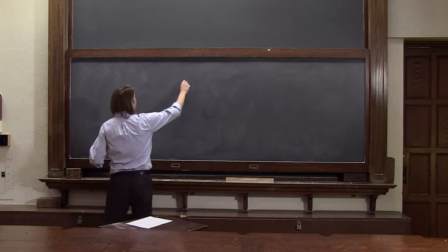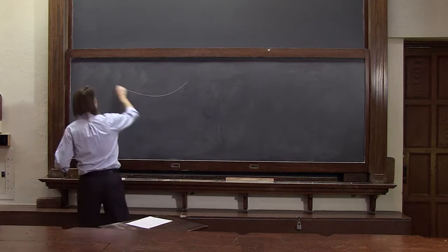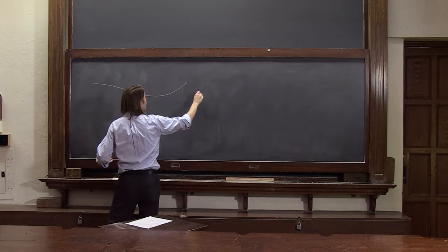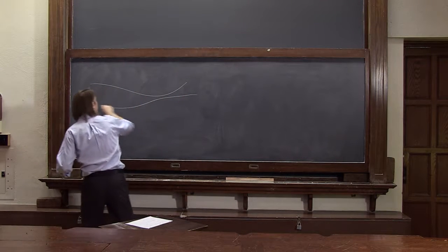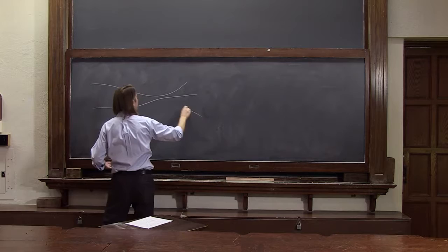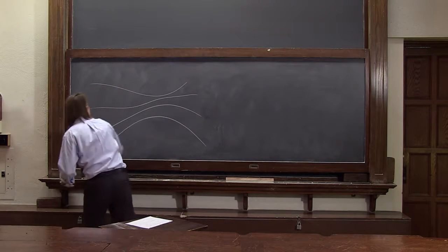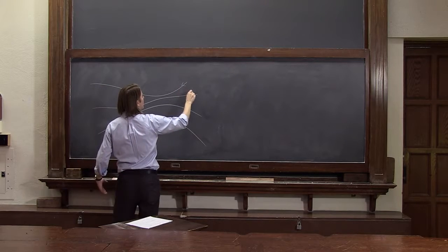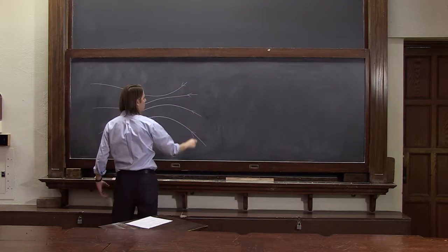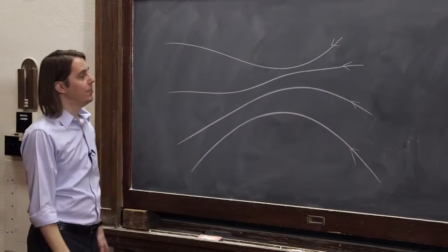So let's look at some crazy field. I'll have field lines coming in like that, and they kind of come in like that. Another one comes in like that. And we'll have the field pointing in that direction. Those are the field lines.